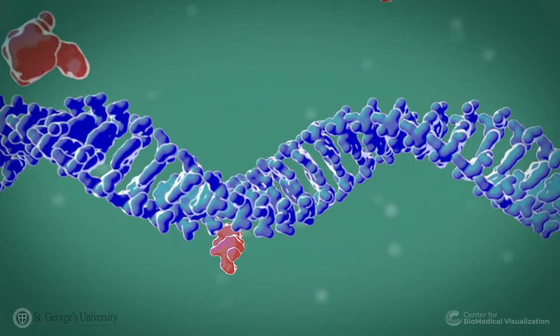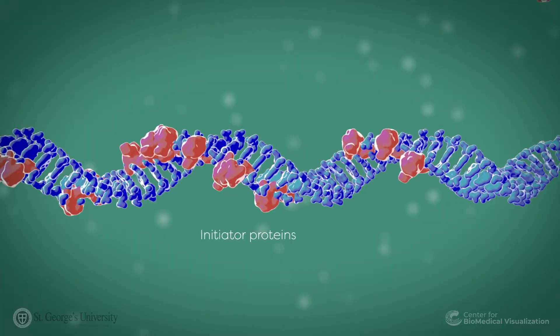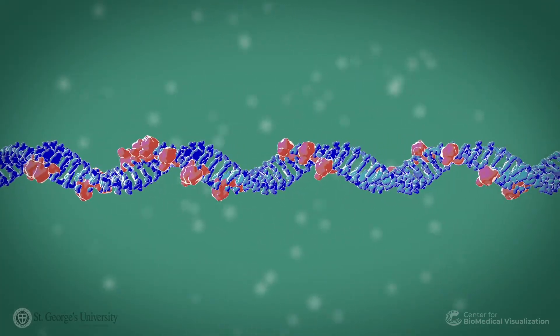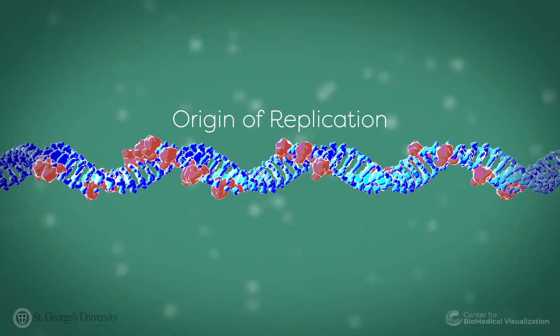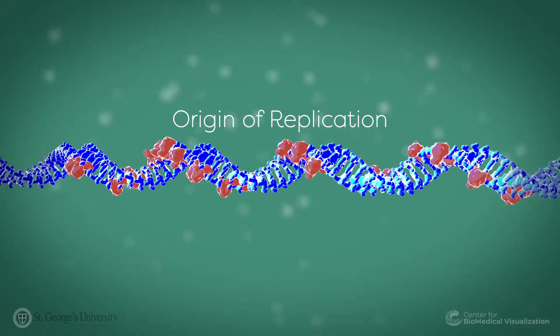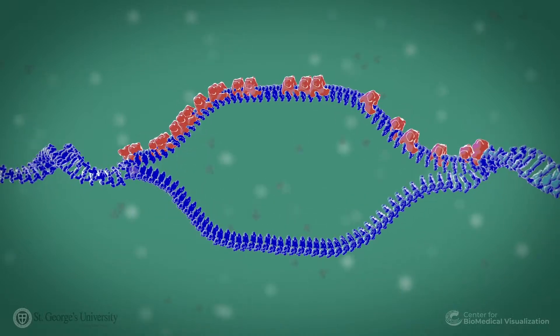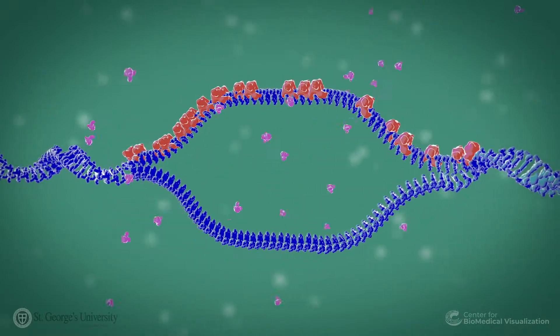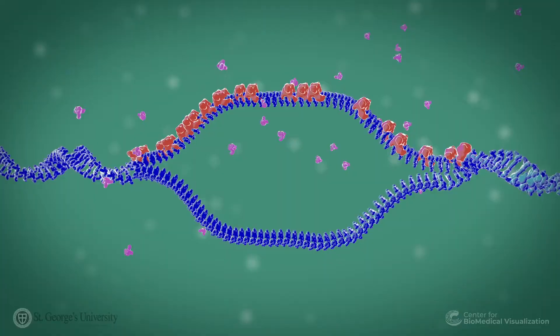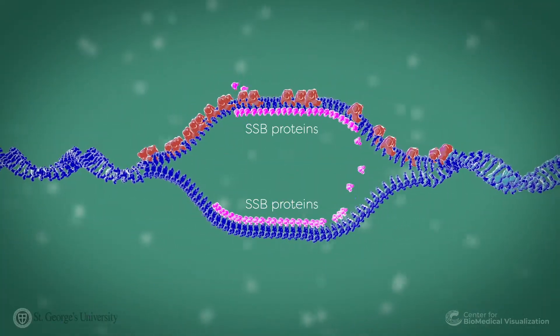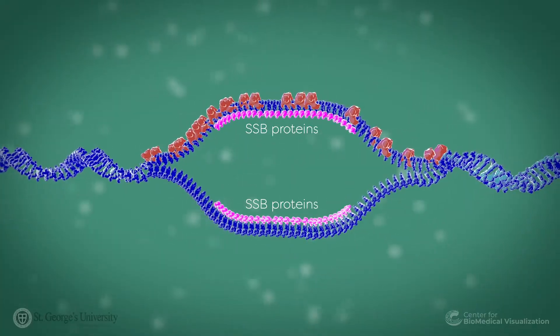DNA replication starts by initiator proteins binding to specific DNA sequences at a site called the origin of replication. The initiator proteins proceed to break hydrogen bonding between DNA strands at the origin of replication. This forms the replication bubble and single-stranded binding proteins bind to the template DNA.